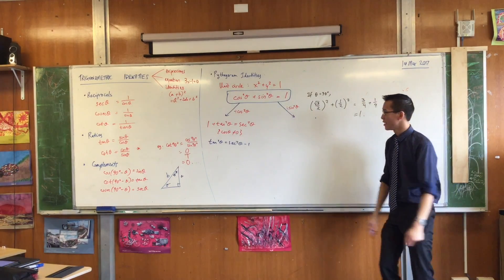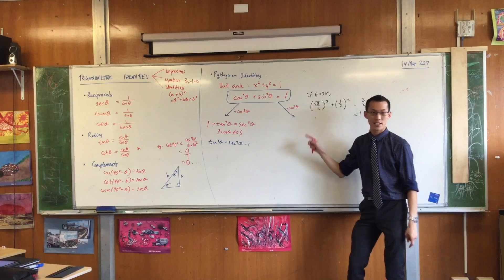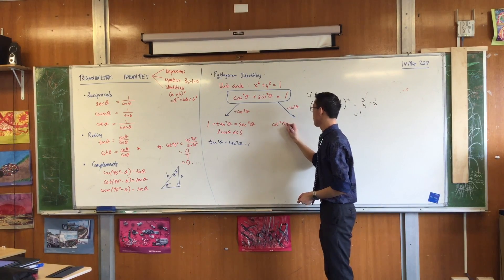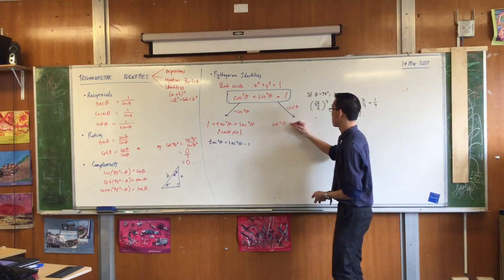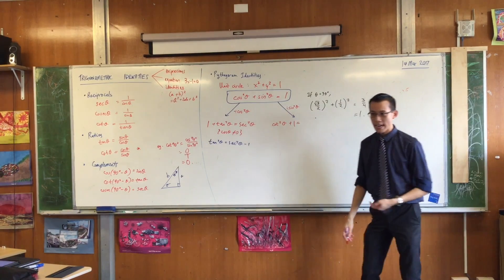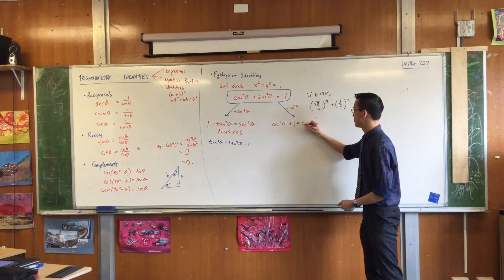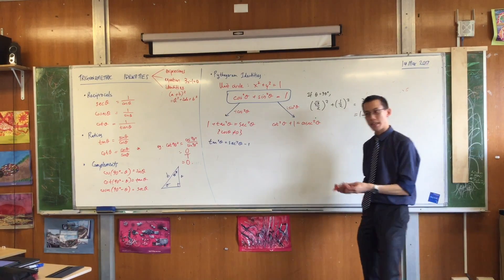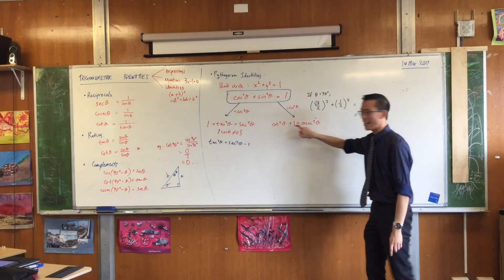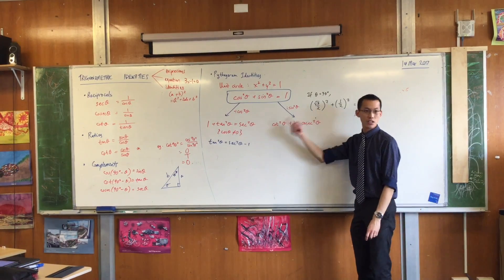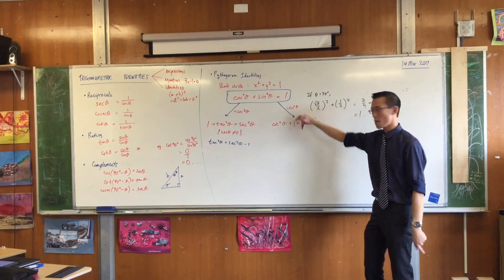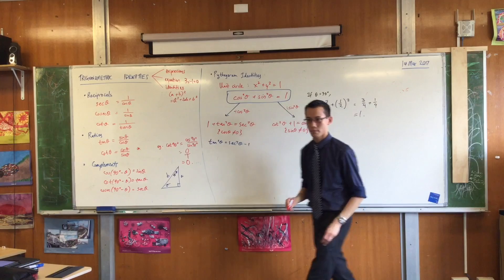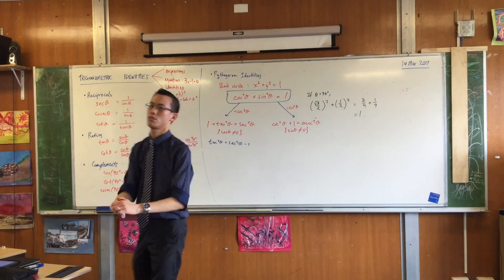Another useful version comes from dividing the primary identity by sin squared θ instead. Cos squared divided by sin squared is cot squared, sin squared divided by sin squared is 1, and 1 divided by sin squared is cosec squared. So we get: cot squared θ plus 1 equals cosec squared θ. This is the version you use if the expression you've been given has cot and cosec in it — provided sin θ is not 0, since we divided through by sin squared.